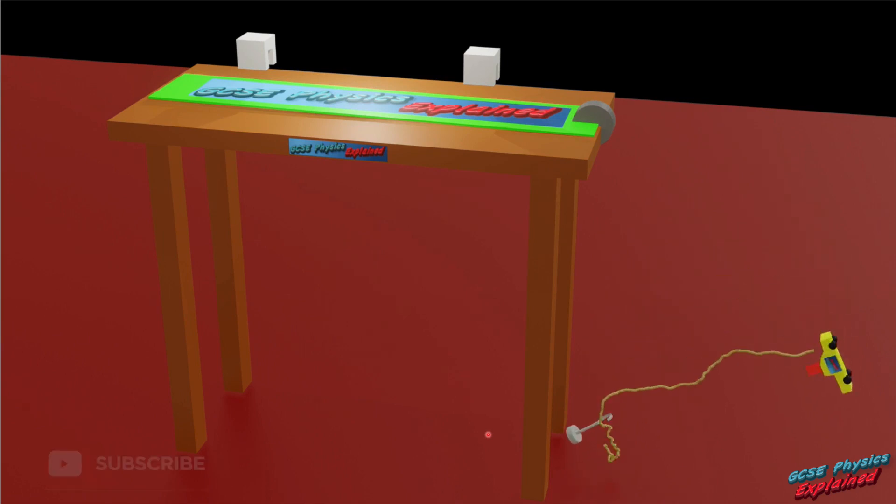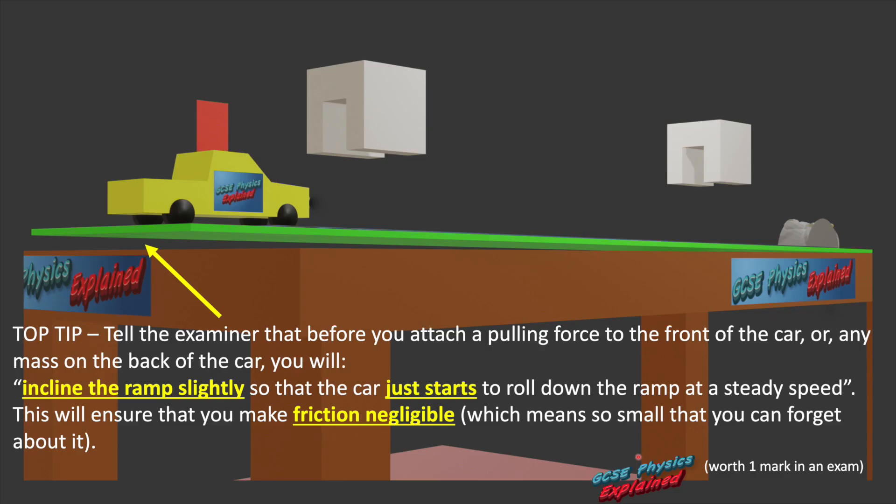Now watch your toes as that car comes down and the mass itself. Ideally, you should have a bucket there in order to catch the car. You get one mark in an exam for seeing how to minimise the risks. So putting a bucket there full of crumpled up paper, that'll get you one mark. Right. For another mark in an exam, here's a top tip. Tell the examiner that before you attach a pulling force to the front of the car or any mass on the back of the car, you will incline the ramp slightly so that the car just starts to roll down the ramp at a steady speed. This will ensure that you make friction negligible, which means so small that you can forget about it.